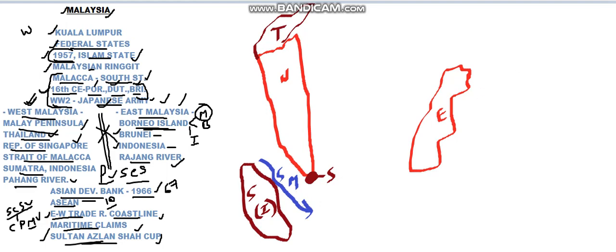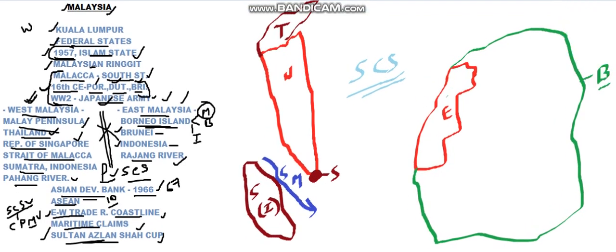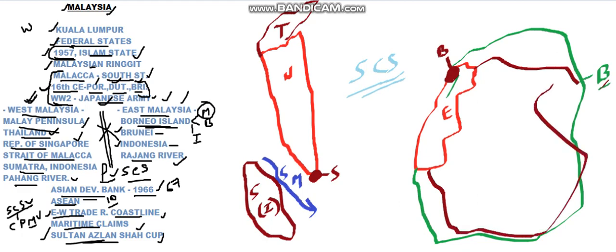Now coming to eastern Malaysia — in between western Malaysia and eastern Malaysia there is the South China Sea. Eastern Malaysia is part of the huge island of Borneo. This island is distributed among three nations: Malaysia as eastern Malaysia, Brunei, which is present in a small part on the north side, and Indonesia, which is the south bordering country of eastern Malaysia.